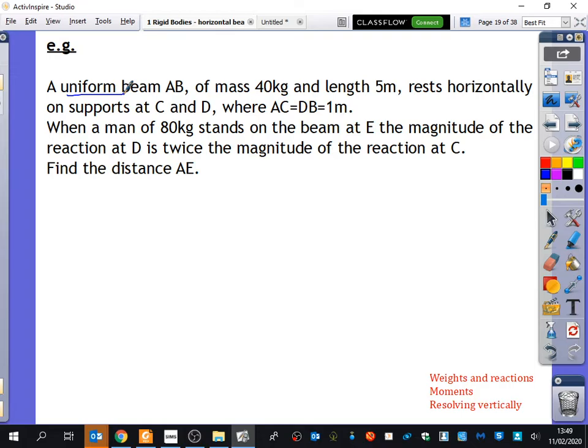So, uniform beam, we haven't looked at non-uniform, but we know what that means. Mass 40 kilograms and length 5 meters, rests horizontally on supports at C and D, where AC is the same as DB, which is the same as 1. So let's actually just draw the beam to begin with. And we know the whole thing is 5 meters, this is A and B. The distance between A and C is 1. So there's going to be my C here. And the distance between B and D is also 1.